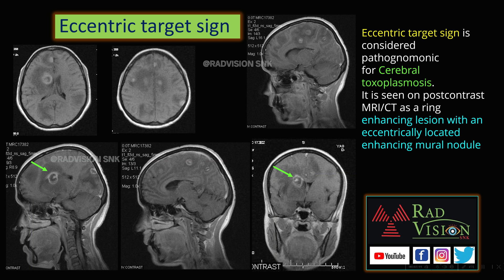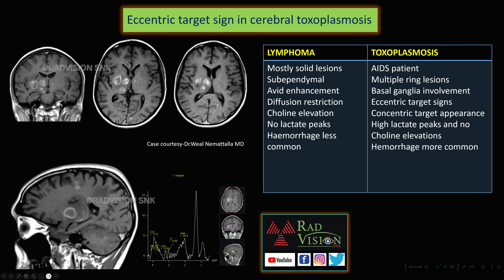Next: what is the eccentric target sign? Here you can see there is an enhancing lesion with an eccentrically located enhancing mural nodule. This eccentric target sign is also seen in cerebral toxoplasmosis, and there will be lactate peaks in toxoplasmosis. The close common differential is lymphoma.